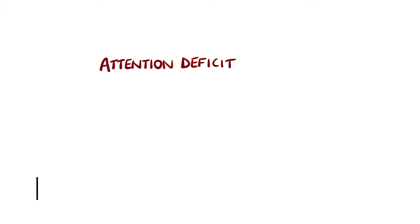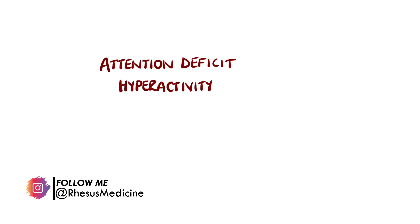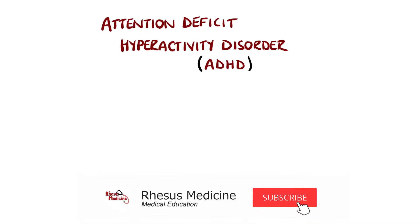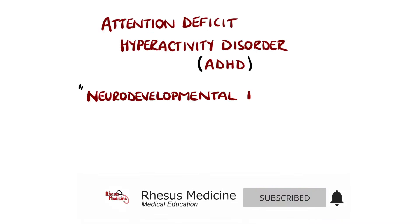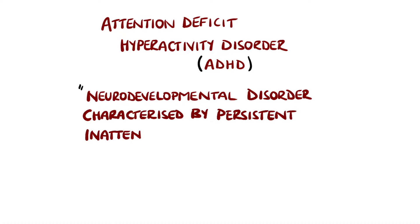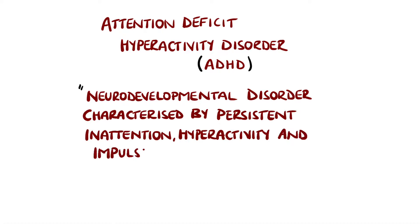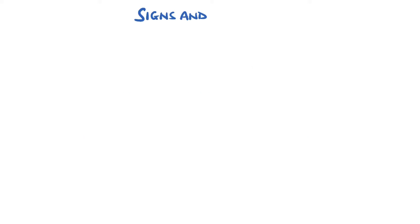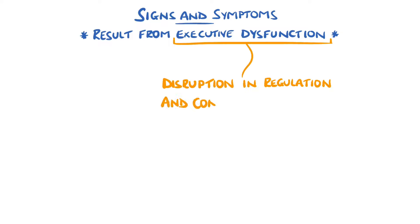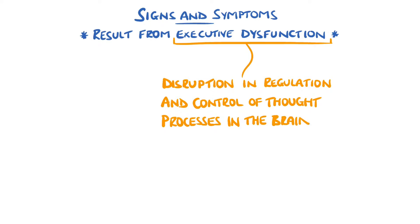Attention Deficit Hyperactivity Disorder, known more commonly as ADHD, is a neurodevelopmental disorder characterised by persistent inattention, hyperactivity and impulsivity. The signs and symptoms are the result of executive dysfunction, meaning a disruption in the way the brain is able to regulate and control thought processes.